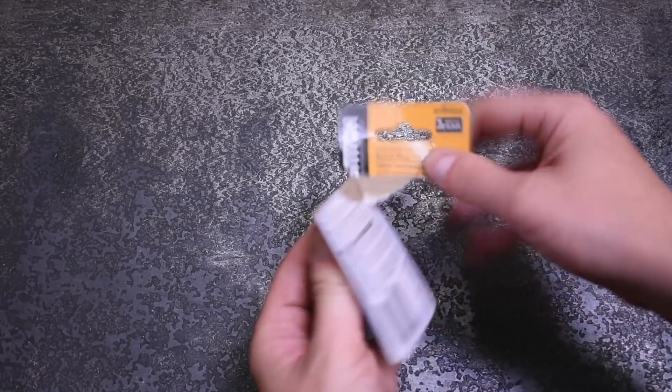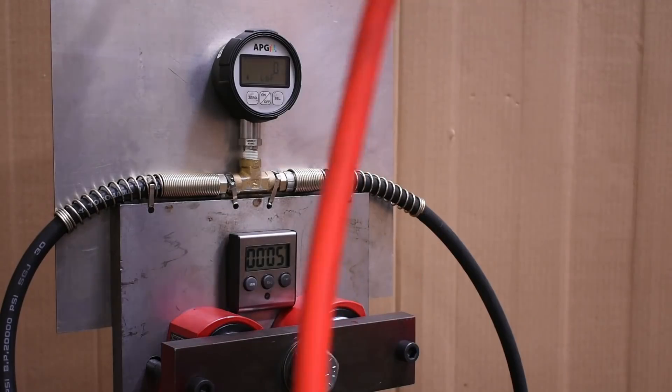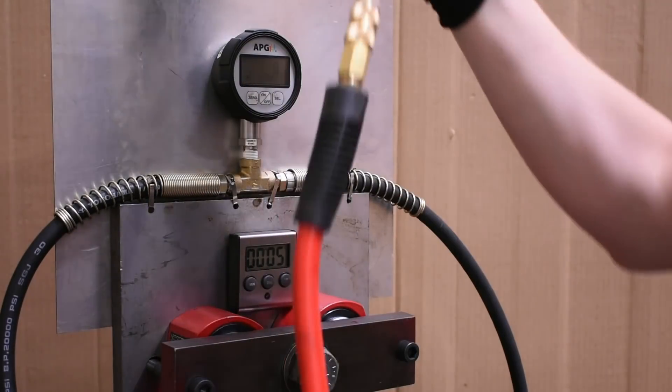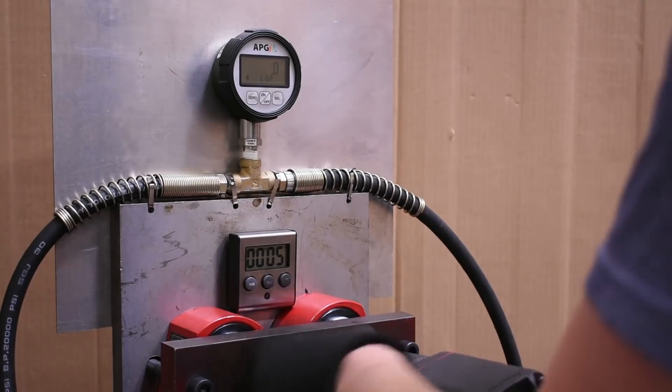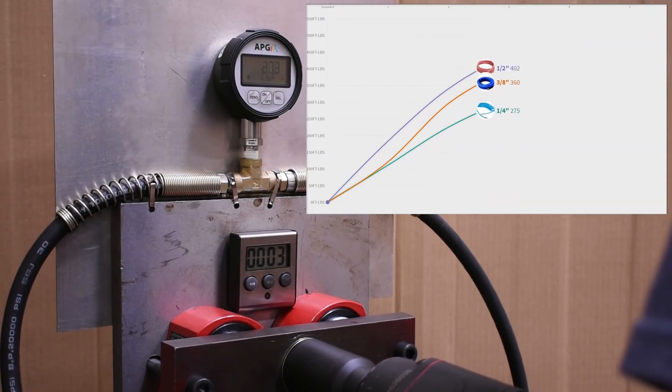Welcome back to the Torque Test Channel. You guys really liked our extension length versus power loss and hose diameter versus power loss for science videos, and in that air hose video we promised we would take a look at how air fittings and couplers affected power on your impact wrench at some point.